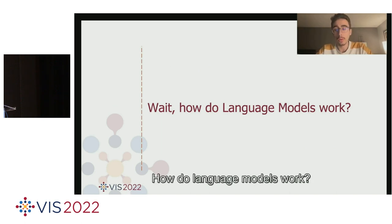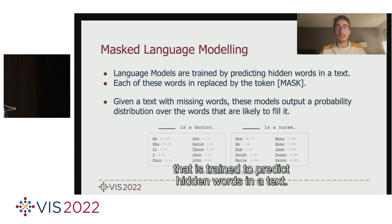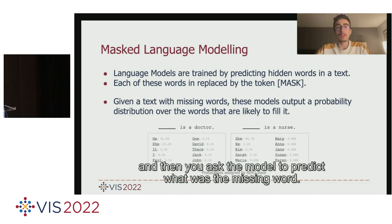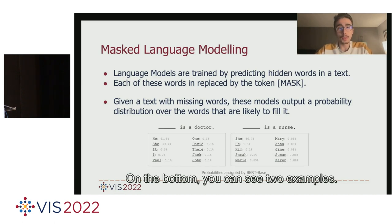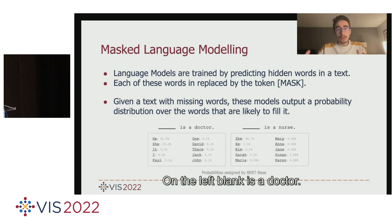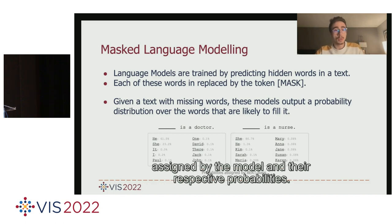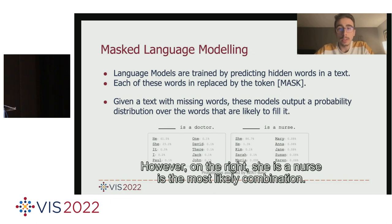How do language models work? In simple words, language models are architectures trained to predict hidden words in a text. You take a sentence, hide some words, replace them with a mask token, and ask the model to predict the missing word. We can use these models to fill in the blanks. For example, 'blank is a doctor' — the model assigns 'he' as the most likely word. For 'blank is a nurse,' 'she' is the most likely combination.